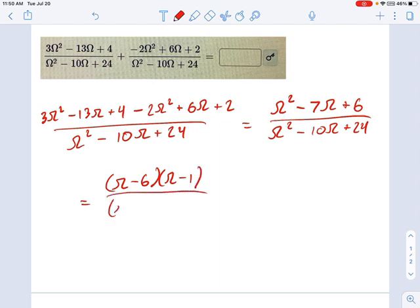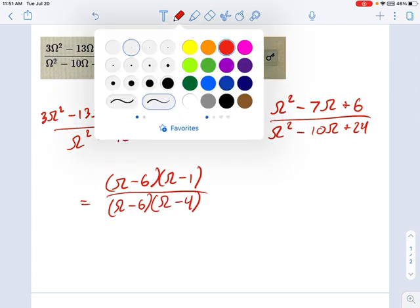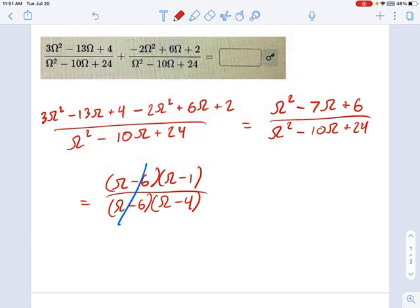So you just come through here, cancel out the common factor. And our final answer is omega minus 1 over omega minus 4.